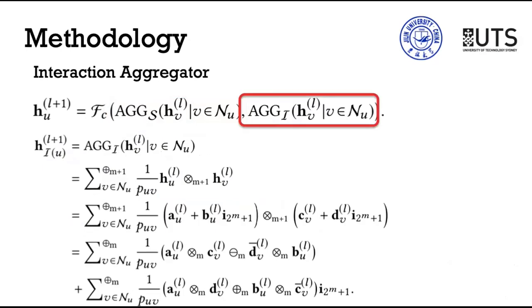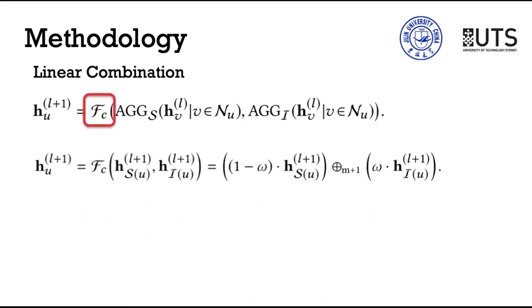Feature interactions are also very important signals. Therefore, we design an interaction aggregator to capture such information by applying hypercomplex multiplication. Different from multiplication in the real number system, hypercomplex multiplication captures latent interdependency between all components, which encourages a more comprehensive interaction of the neighborhood. To combine the two aggregators, we adopt a linear combination scheme. Here, omega is a trade-off factor in function f.